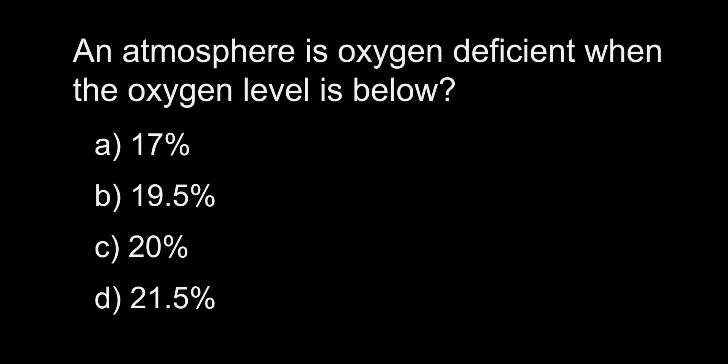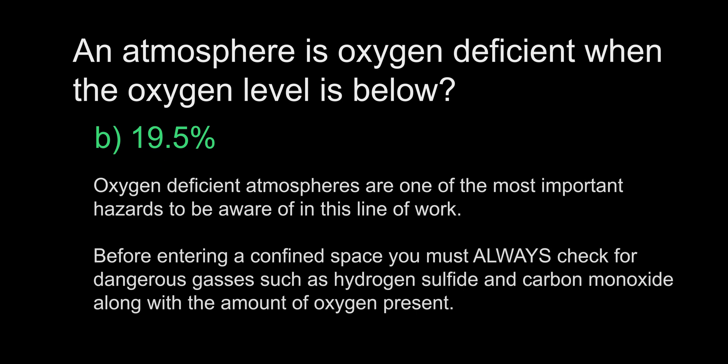An atmosphere is oxygen deficient when the oxygen level is below: A. 17%, B. 19.5%, C. 20%, D. 21.5%. The answer is B, 19.5%. OSHA has determined the optimal range for oxygen in the air for humans to be between 19.5% and 23.5%. Lack of oxygen or the presence of harmful gases such as hydrogen sulfide when entering confined spaces has taken many lives over the years. One must always check a confined space using a functioning and calibrated gas detector before entering, and a gas detector should remain with you while inside. There should also be someone outside the confined space who is responsible for monitoring the safety of those inside.